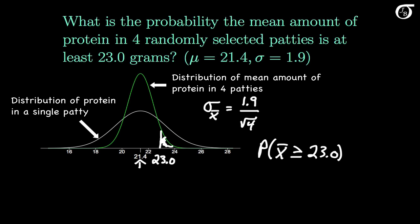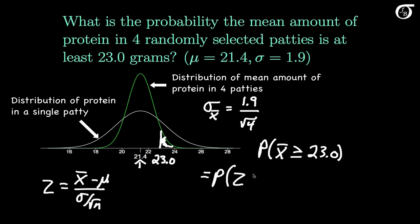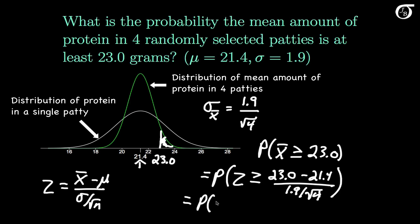To find that probability we standardize again. When talking about the mean of n observations, we let Z equal X bar minus mu, divided by sigma over the square root of n. So this probability becomes the probability that Z is greater than or equal to 23.0 minus 21.4, all over 1.9 divided by the square root of 4. This works out to the probability that Z is greater than or equal to 1.684, which from software or a standard normal table is 0.046 to three decimal places.